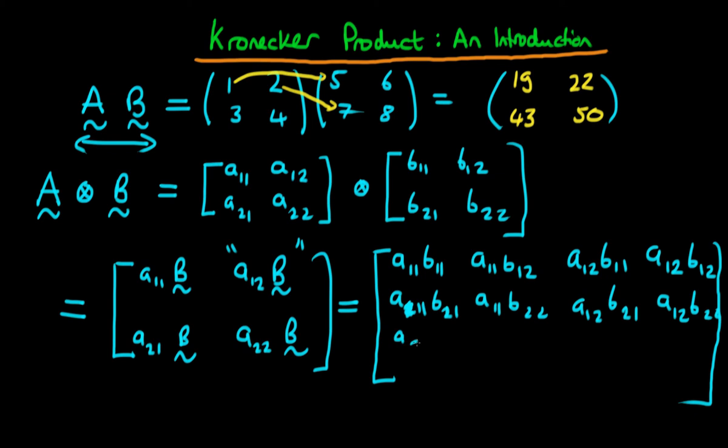Those are the top two blocks. To get the other two blocks, we would do A21 times the various components in B for the first four, and then A22 times the various components of B for the last four components of the matrix.